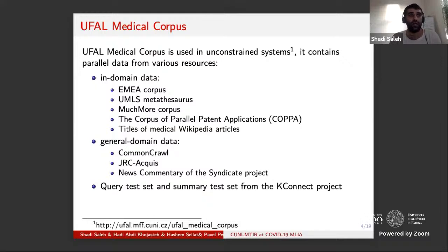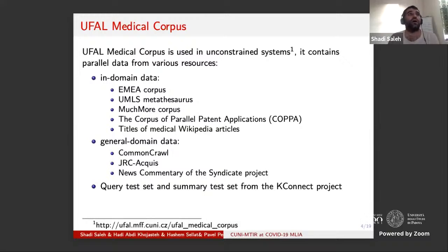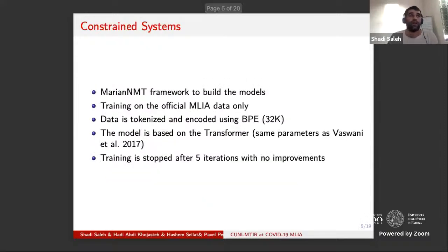We also have a query test set and a summary test set — the query test set contains short sentences while the summary test set contains more complete sentences. From these parallel sentences, we took 10 million sentences per domain and per language pair for the unconstrained systems. For the constrained systems, we used the Marian MT framework. We trained first the model on the official 1 million media data. We tokenized the data using Moses tokenizer and encoded it using byte pair encoding with 32,000 merges. The model was based on the transformer with the same parameters as reported by Vaswani et al. We stopped training after 5 iterations without further improvement on the tuning test set.